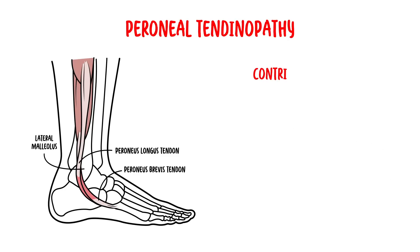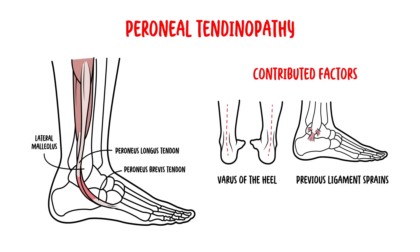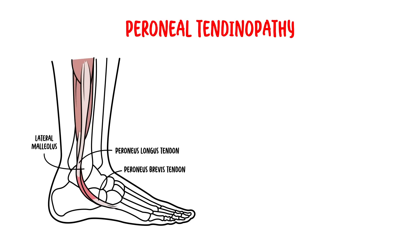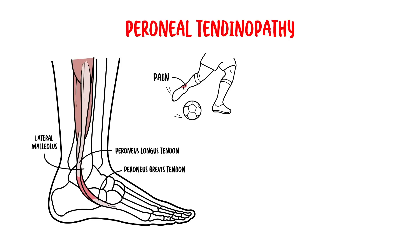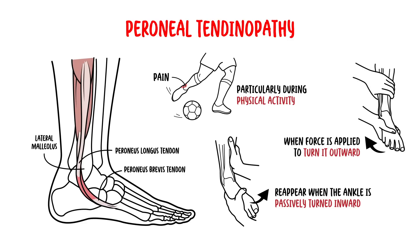Several factors can contribute to developing peroneal tendinopathy, including previous ankle ligament strains from rolling the ankle inwards, and varus of the heel with over-supination. Peroneal tendinopathy causes pain on the outer side of the ankle, particularly during physical activity. Symptoms tend to reappear when the ankle is passively turned inwards, because that irritates the tendon. Pain can also come when force is applied to turn the foot outward against resistance, as the tendon normally acts to move the foot outwards.